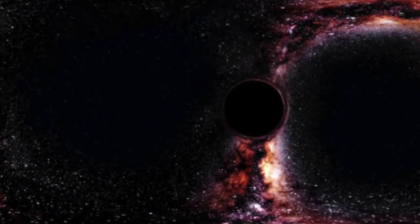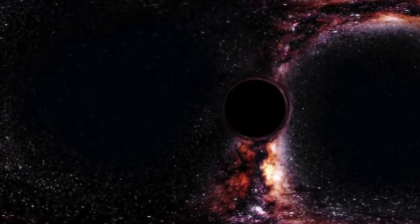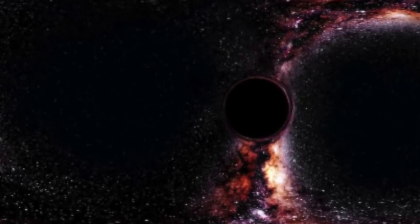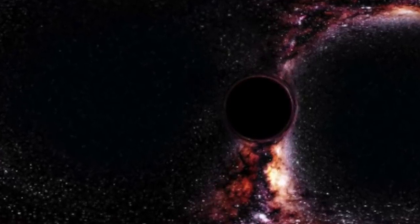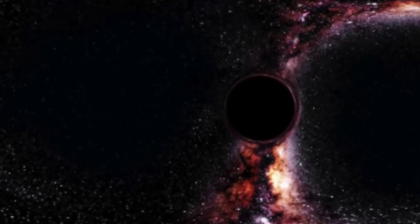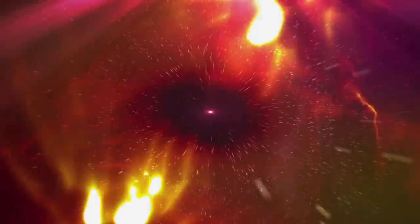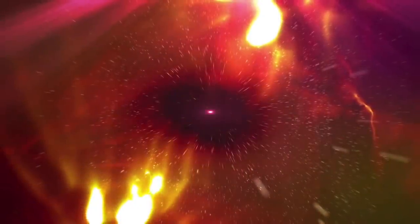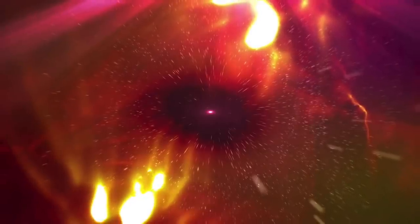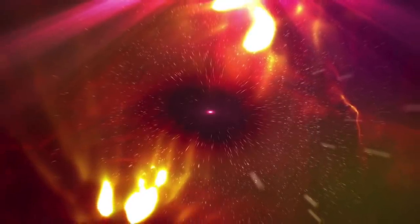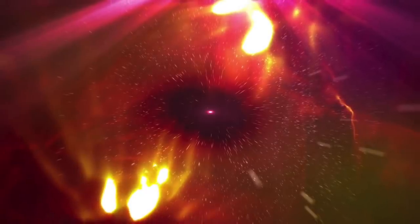One such massive entity is known as SDSSJ, and it's reached a size so massive that it's caused researchers to question the originally believed mathematics behind our universe. Researchers have said this monstrous black hole is more than 12 billion times the mass of our sun, and it's only formed when the universe was a mere 875 million years old.